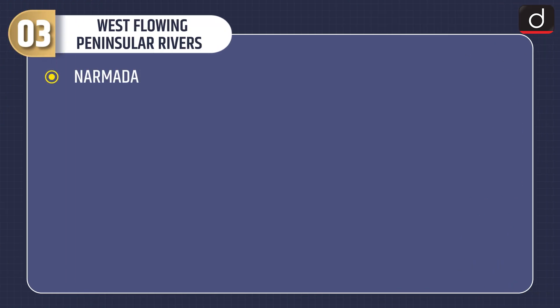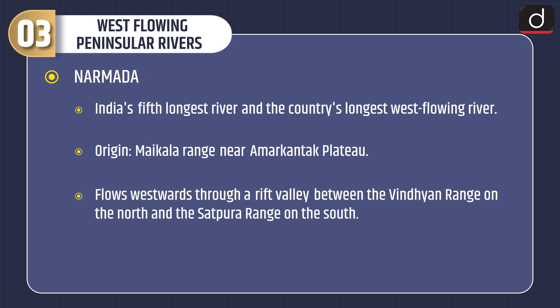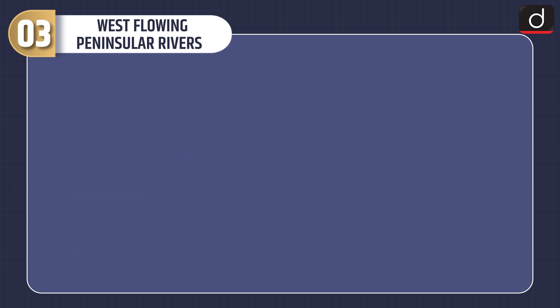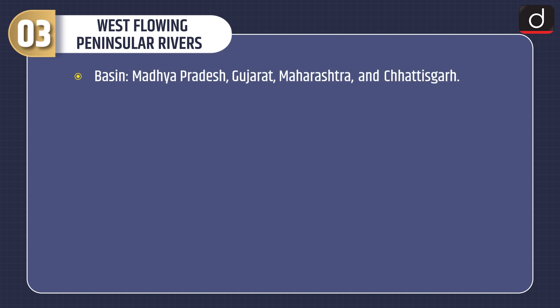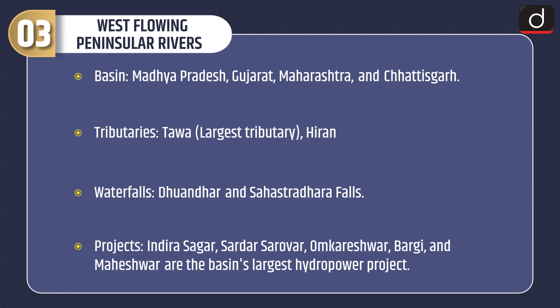Moving on to west flowing Peninsular Rivers. First is Narmada, India's fifth longest river and the country's longest west flowing river. Origin: Maikala Range near Amarkantak Plateau. It flows westwards through a rift valley between the Vindhian Range on the north and the Satpura Range on the south, and empties into the Gulf of Khambhat forming an estuary. Basin: Madhya Pradesh, Gujarat, Maharashtra and Chhattisgarh. Tributaries: Tawa, the largest tributary, and Hiran. Waterfalls: Dhandhar and Sahastradhara Falls. Projects: Indira Sagar, Sardar Sarovar, Omkareshwar, Bargi and Maheshwar.